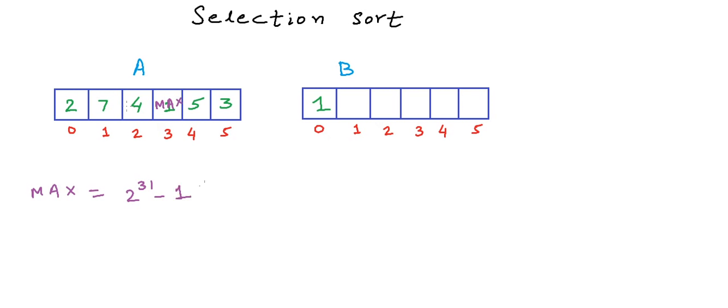And now, we will scan A again for the second largest element that will go to the 1th index in B. That element will be 2. So, 2 again will be replaced by max. And now, the minimum is 3. And we will go on doing this until all the positions in B are filled.